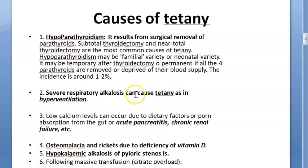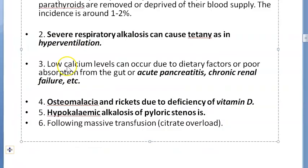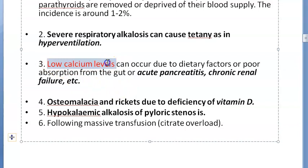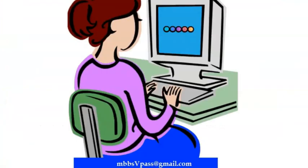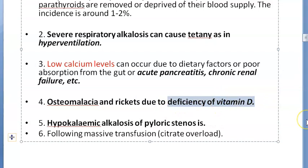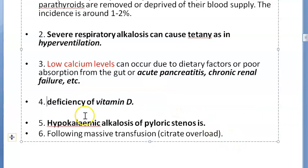A third cause is simply low calcium levels — nothing to do with parathyroids or alkalosis. This can be due to poor dietary intake, poor gut absorption, acute pancreatitis, renal failure, or vitamin D deficiency. Vitamin D deficiency means calcium cannot be absorbed, leading to osteomalacia and rickets — all resulting in hypocalcemia.